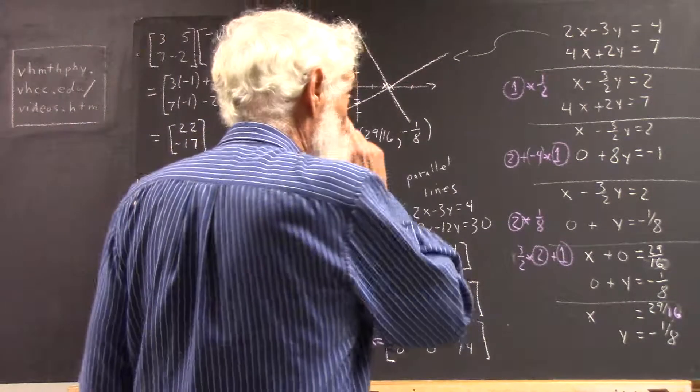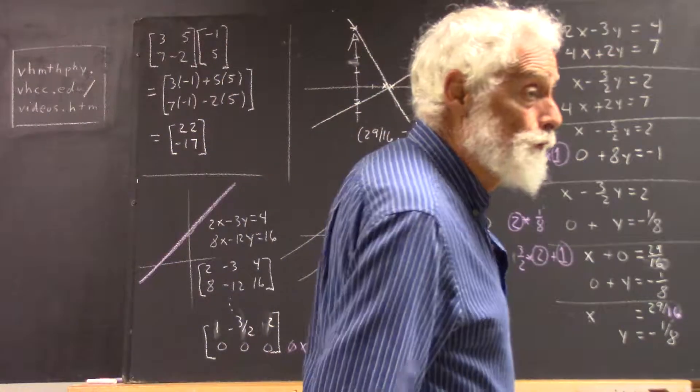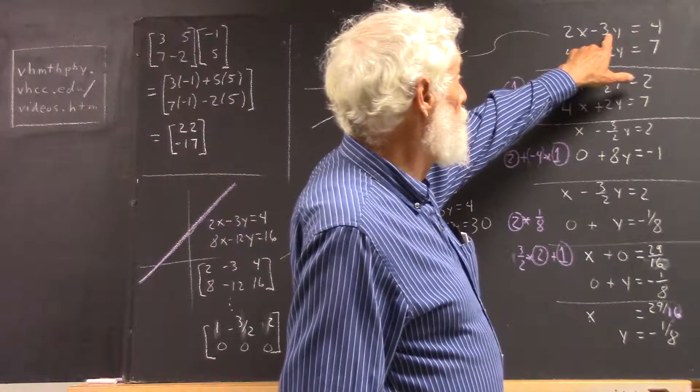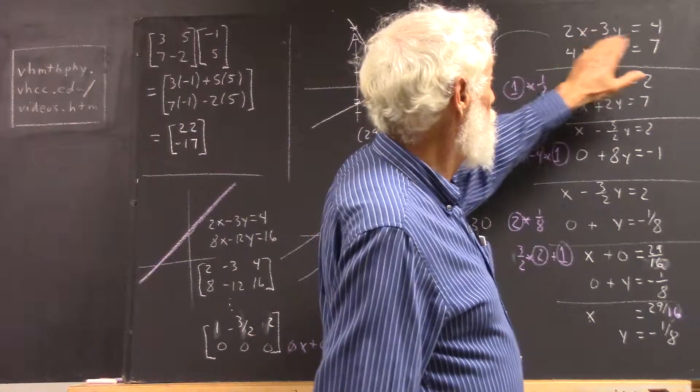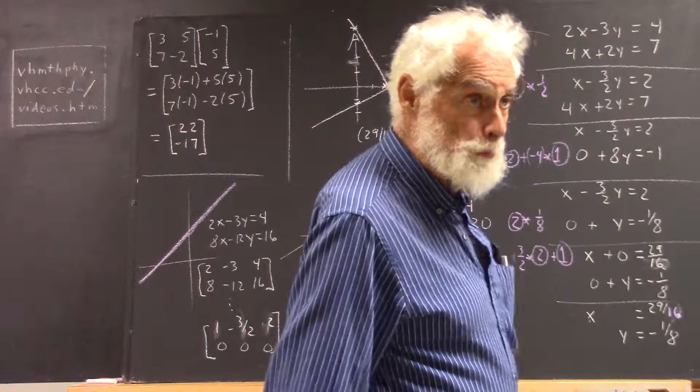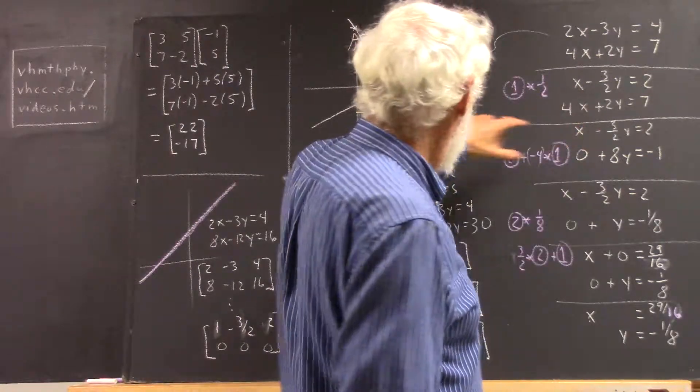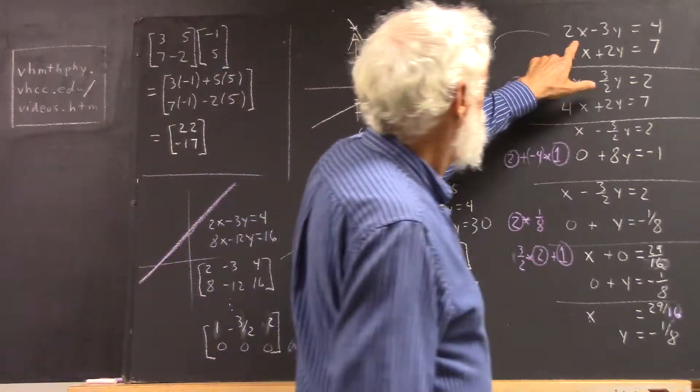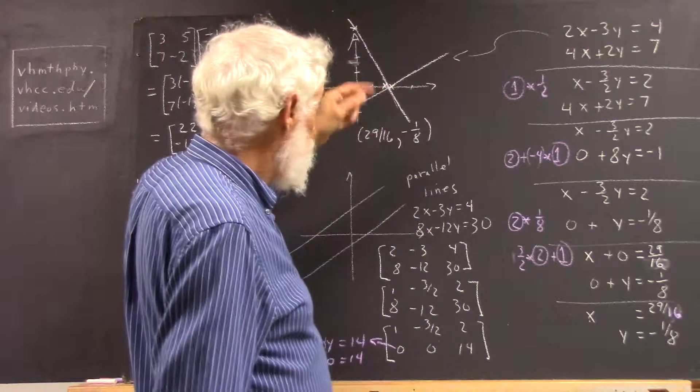Okay, so 2x minus 3y equals 4. If we let y equal 0, we find 2x equals 4, so x equals 2.